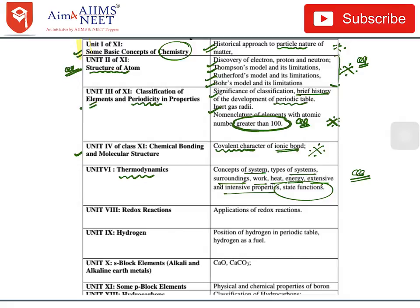In Unit 8 — Redox Reactions — the section given at the end of the chapter is also deleted from the syllabus. In Unit 9 — Hydrogen, which is a very important chapter for NEET and AIIMS — the position of hydrogen in the periodic table and hydrogen as a fuel (about one to two paragraphs in NCERT) can be skipped; there's no need to learn that.